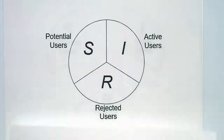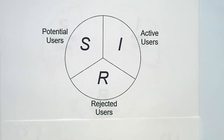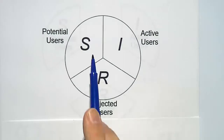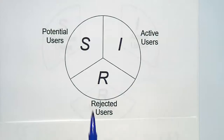So what's the model? We're going to take all the people in the world — at least all the people who might conceivably be customers someday — and break them up into three classes. We have the potential users: those are the people who aren't using your product but might someday. We have the active users: those are your customers today. And we have the rejected users: those are the ones that have looked at your product and said it's not for me — they will never be your customers. We refer to them by the letters S, I, and R.